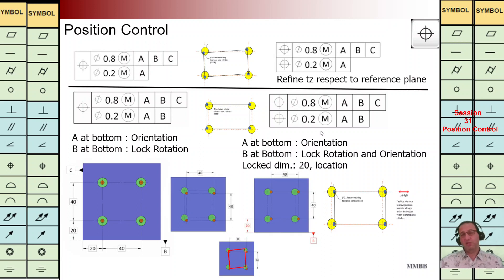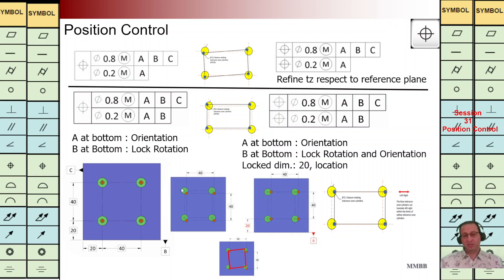We are going to make more limitation by having these two independent FCFs, but whenever we are going to use composite FCF we are going to lock the pattern. When we have composite, the pattern is locked and it can move — the direction should just be parallel to B because we have B here — but it can move within these green areas.